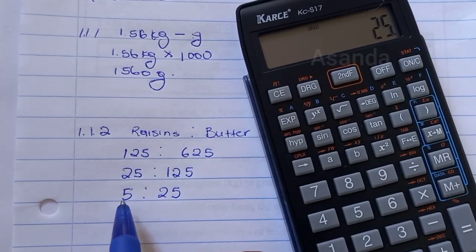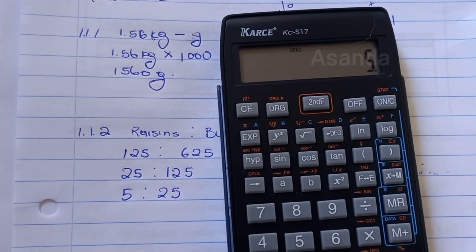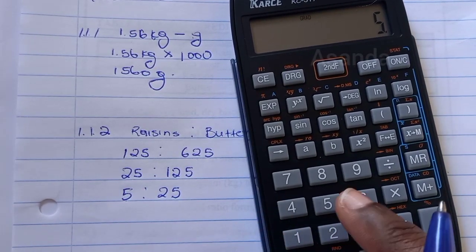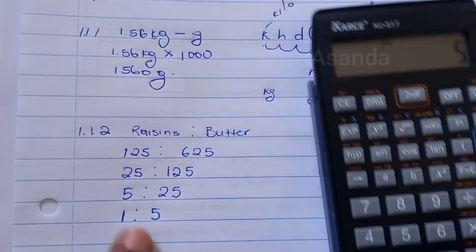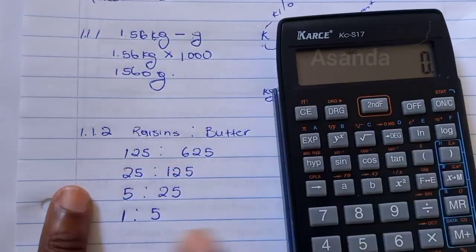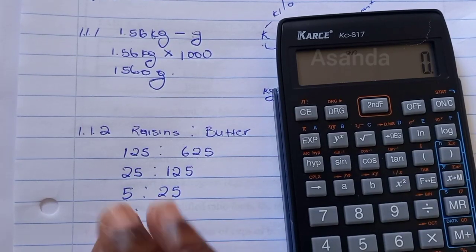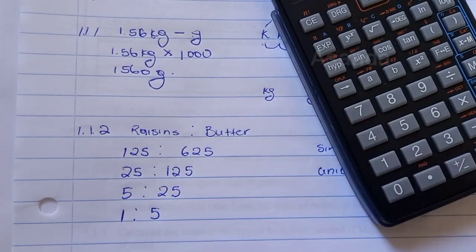And then I can still see that I can divide five by five. Can I divide 25 by five? Yes. So I can divide by five and say 25 divided by five gives me one this side and five this side. So that is simplified. I like to start from the smallest number and build up. So this comes out as a unit ratio, but that's not what they asked, which is fine.